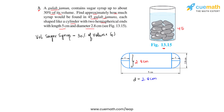Therefore, the radius for both the cylinder and the hemisphere will be equal to half of the diameter, which is 1.4 centimeters. The radius of each hemispherical part is 1.4 centimeters. Subtracting both hemispherical radii (1.4 + 1.4) from the total length of 5 centimeters gives us the height of the cylinder: h equals 2.2 centimeters.